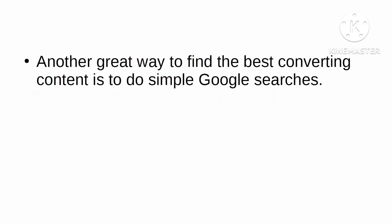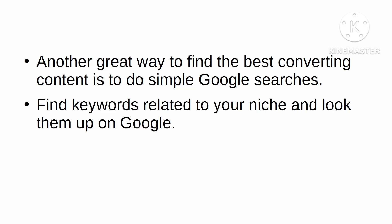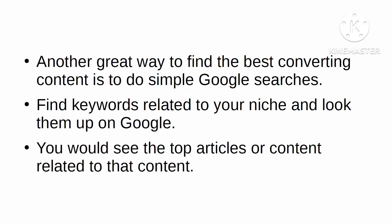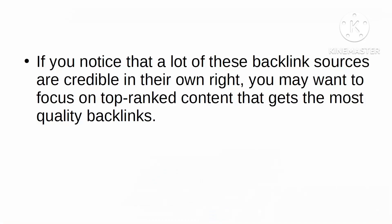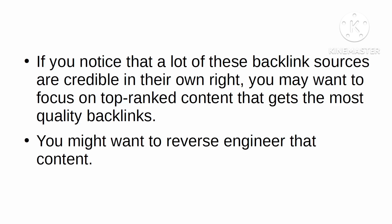Top search results with great backlinks. Another great way to find the best converting content is to do simple Google searches. Find keywords related to your niche and look them up on Google. You would see the top articles or content related to that topic. Use tools like ahrefs.com to see the backlinks of these articles. If you notice that a lot of these backlink sources are credible in their own right, focus on top ranked content that gets the most quality backlinks — and reverse engineer that content.